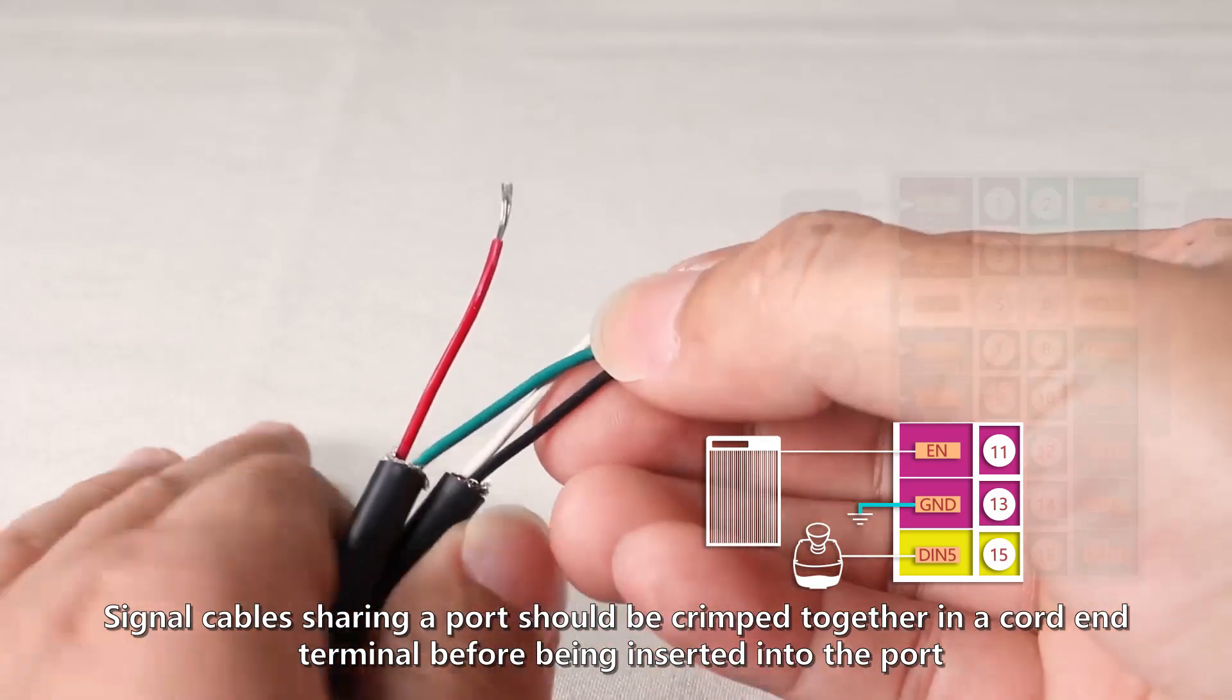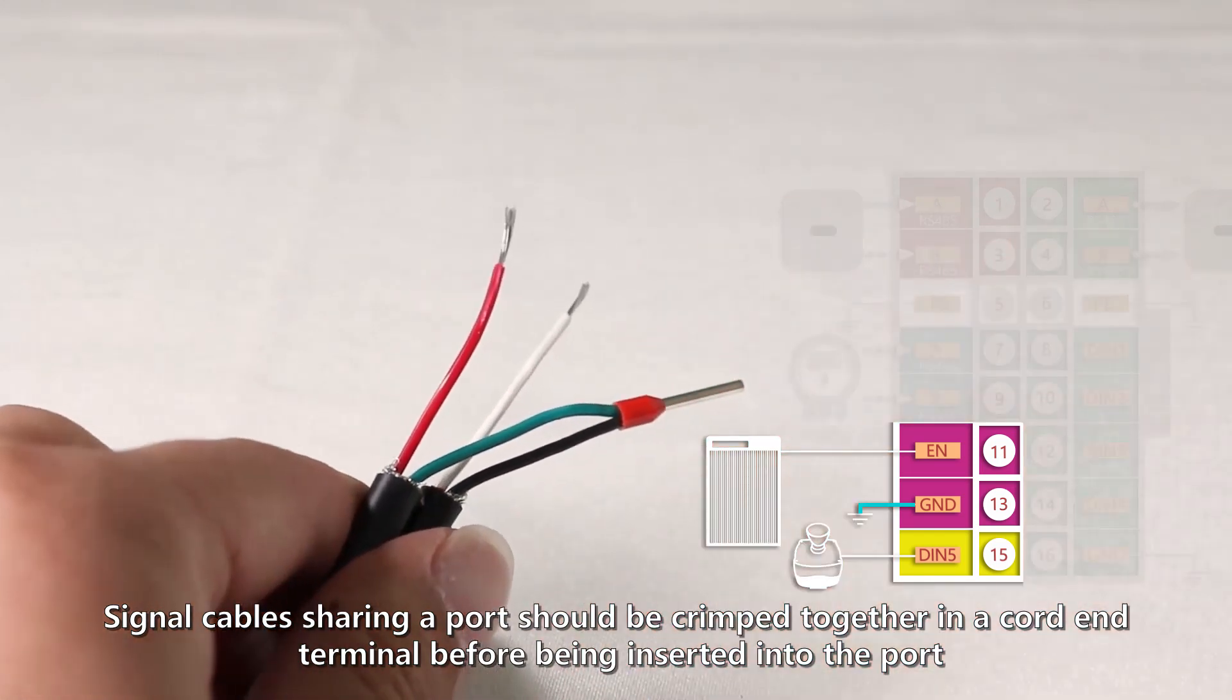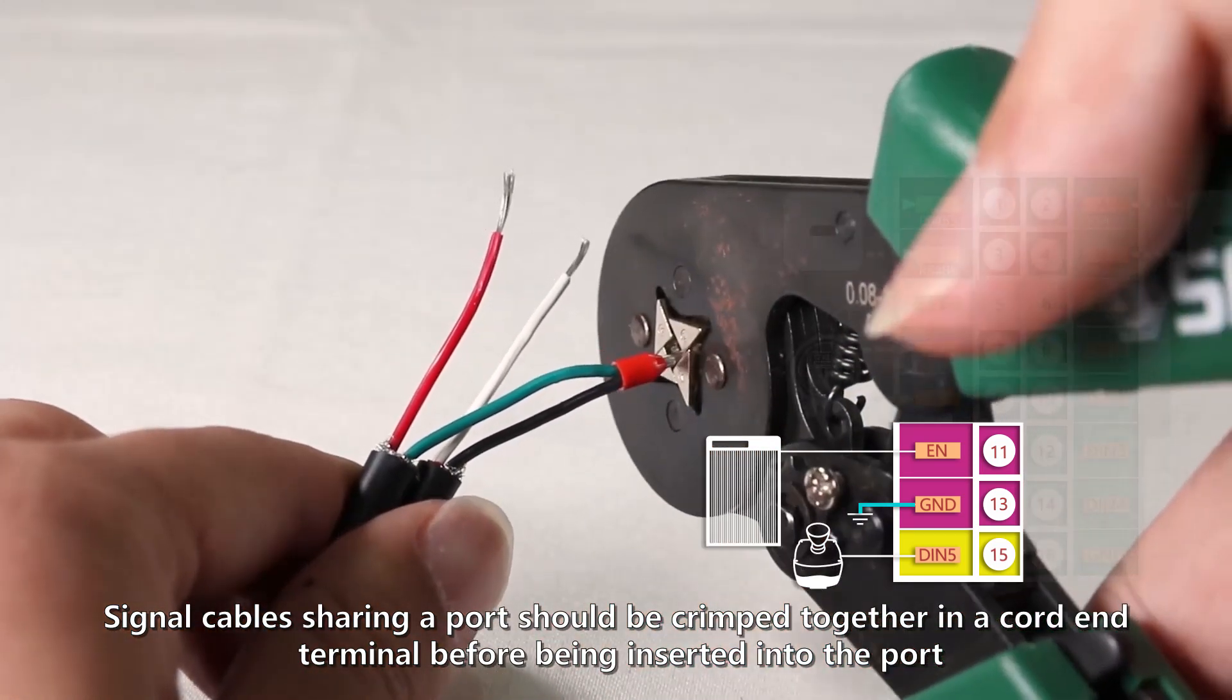Signal cables sharing a port should be crimped together in a cord end terminal before being inserted into the port.